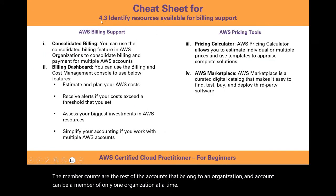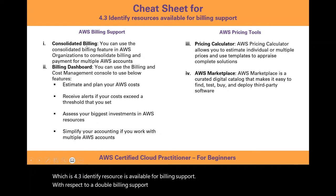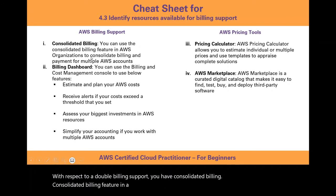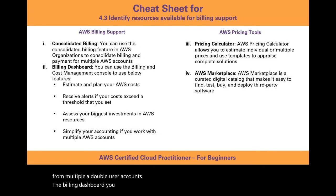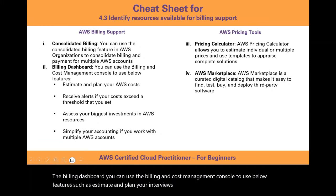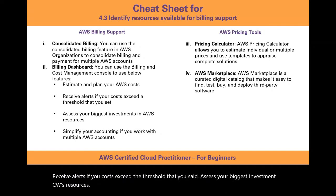For 4.3: identifying resources available for billing support. The consolidated billing feature in AWS Organizations allows you to consolidate billing and make payments from multiple AWS accounts. Using the Billing and Cost Management console, you can estimate and plan AWS costs, receive alerts if costs exceed a threshold, assess your biggest AWS investments, and simplify accounting across multiple AWS accounts.